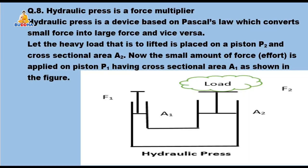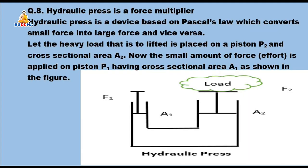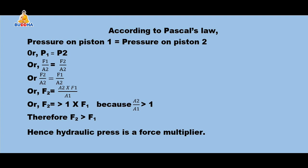From Pascal's law we can write that pressure on piston 1 equals pressure on piston 2. We are putting a load on the piston with cross-sectional area A2, which from the figure is greater. By the definition of pressure — force per unit area — pressure on piston 1 is F1/A1, and pressure on piston 2 is F2/A2.